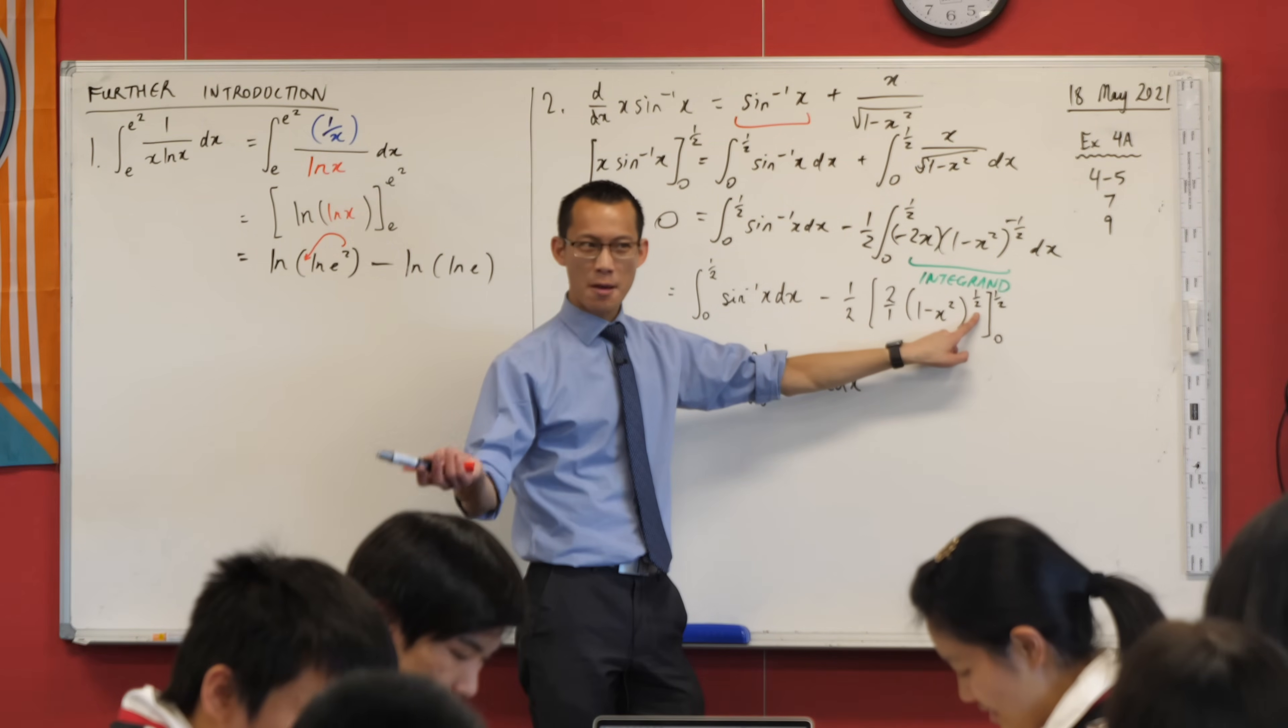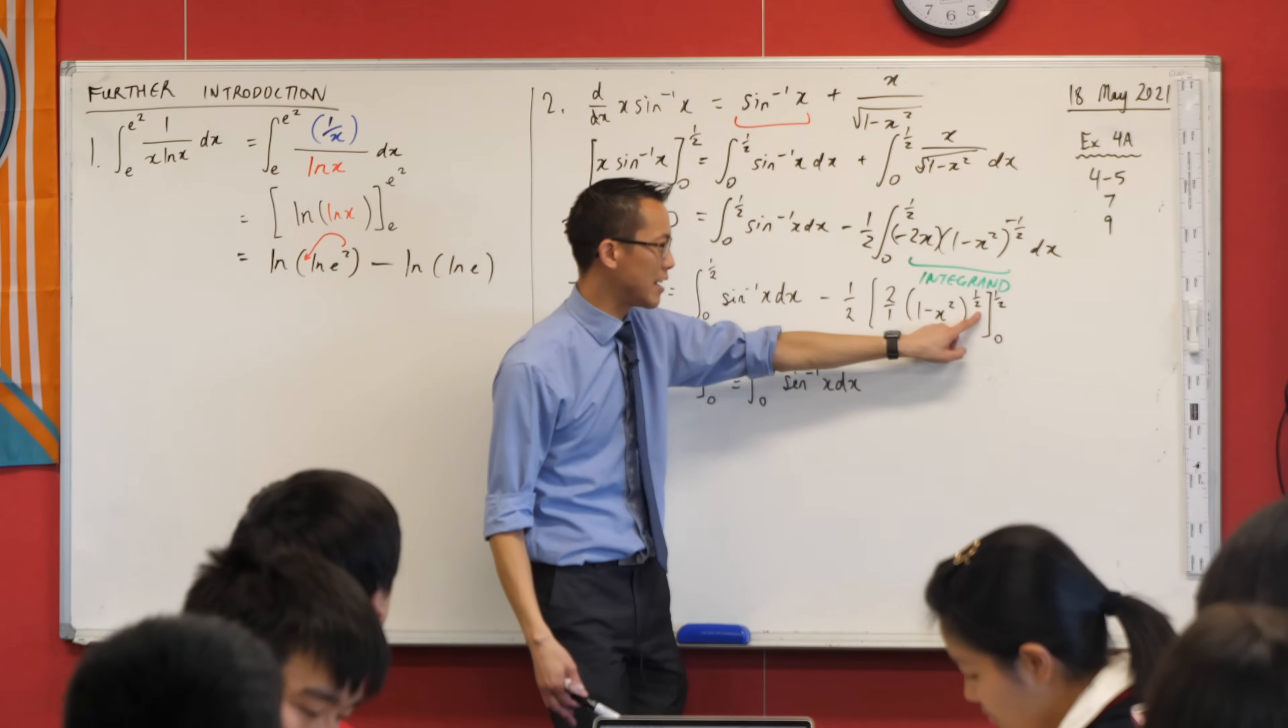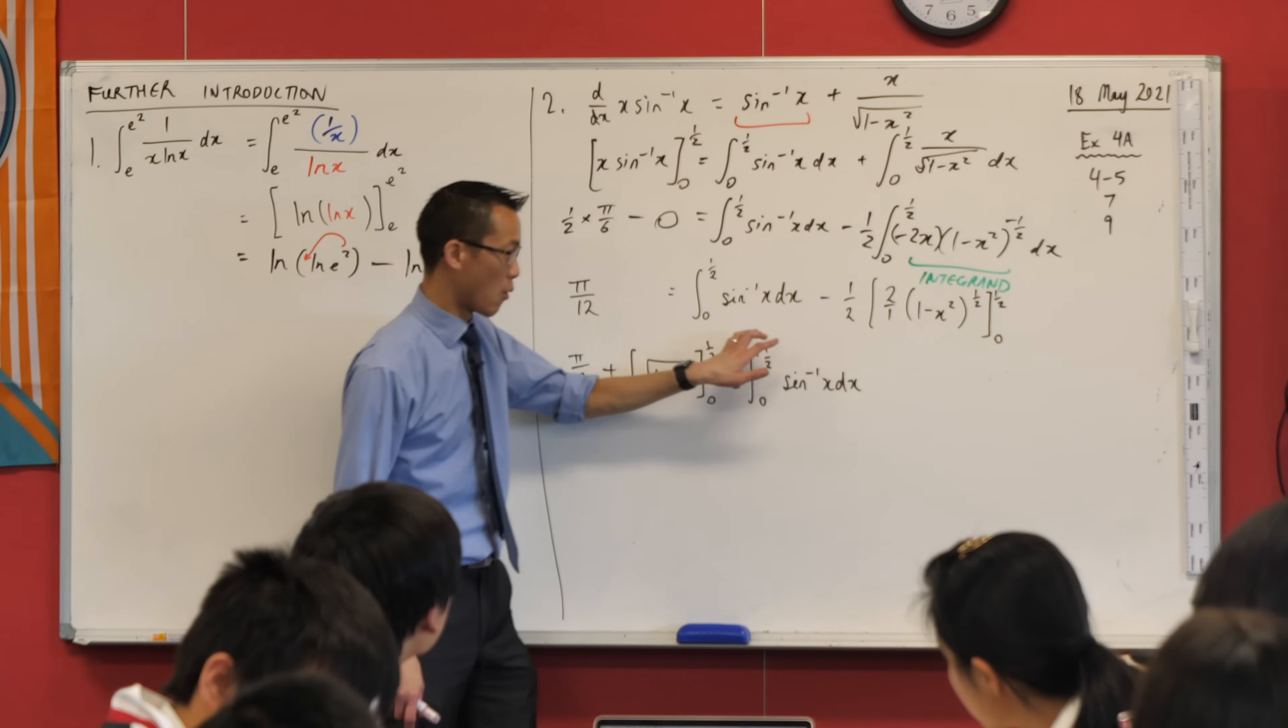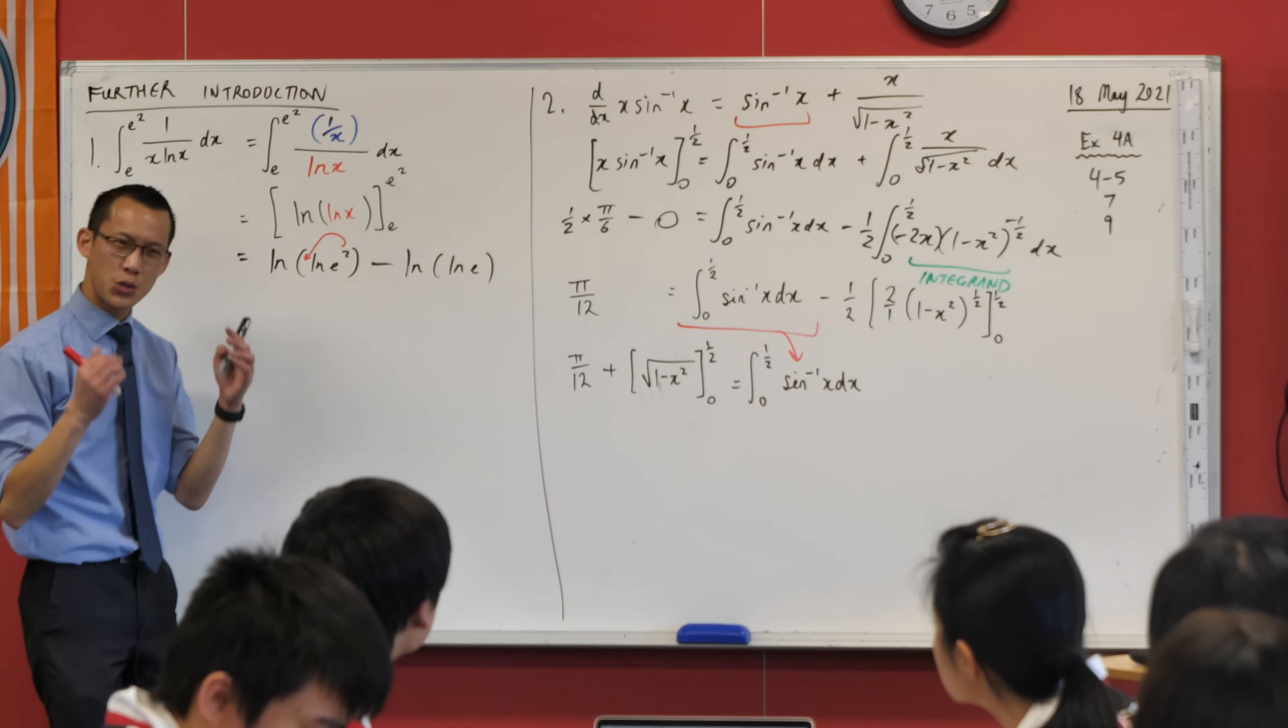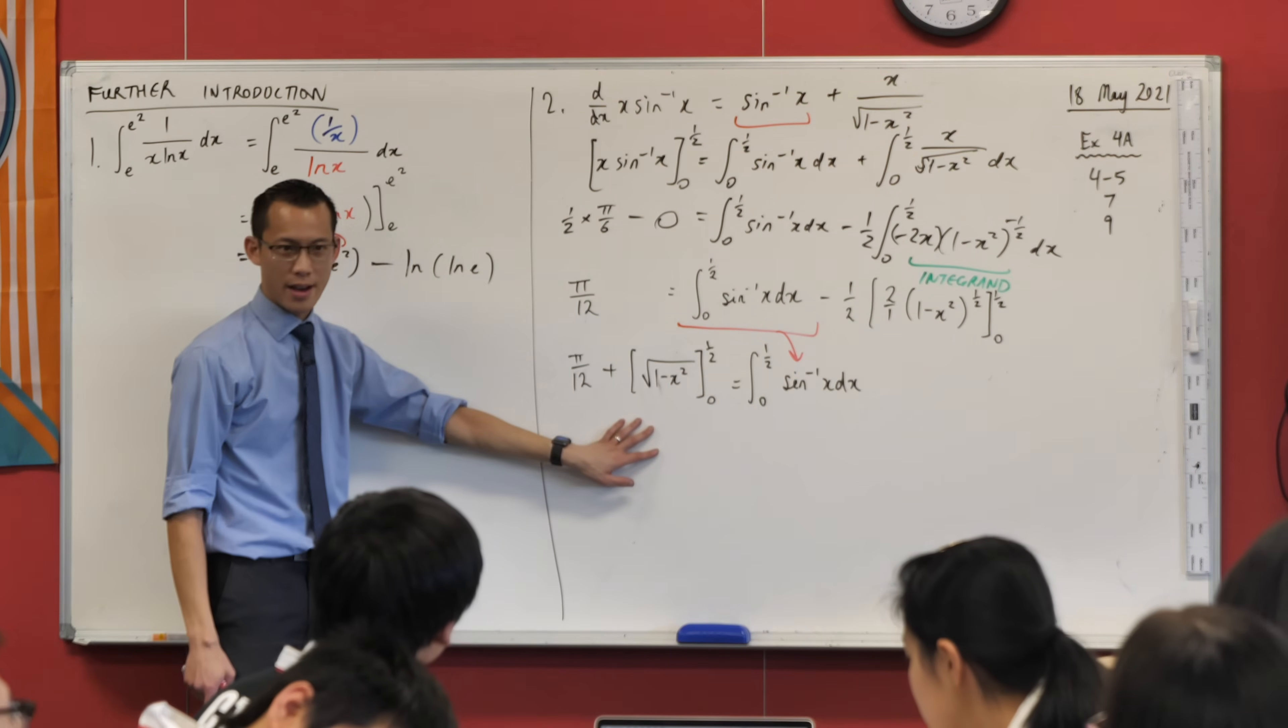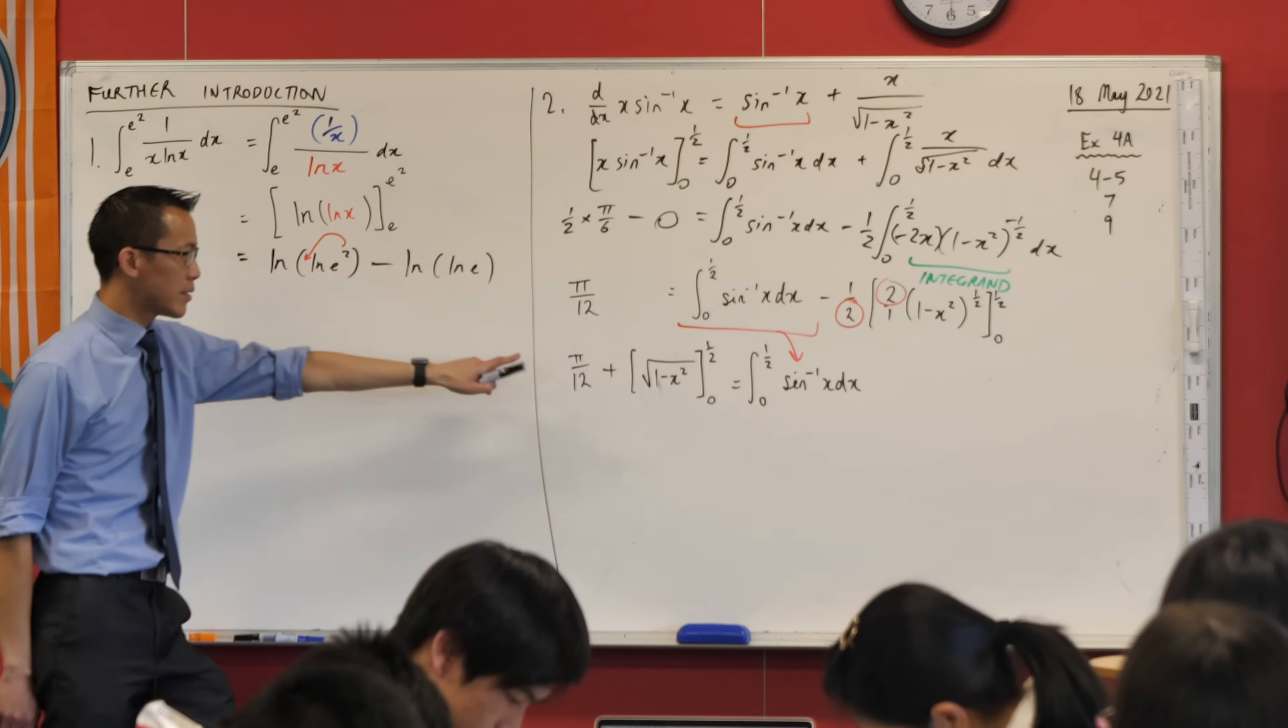This is reverse chain rule in here. I've increased the power by one, so it's gone from - just watch out, fractions, negatives, everything can possibly go wrong. You add one, gives you positive a half. But then after increasing the power, just like we did in advanced integration, you divide by that power. That's why I've awkwardly written it as 2 over 1 to remind you that this is where that comes from. I've divided by the new power, so that's why it's upside down.